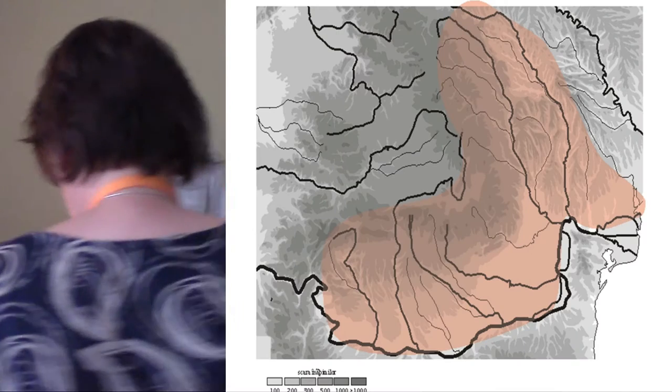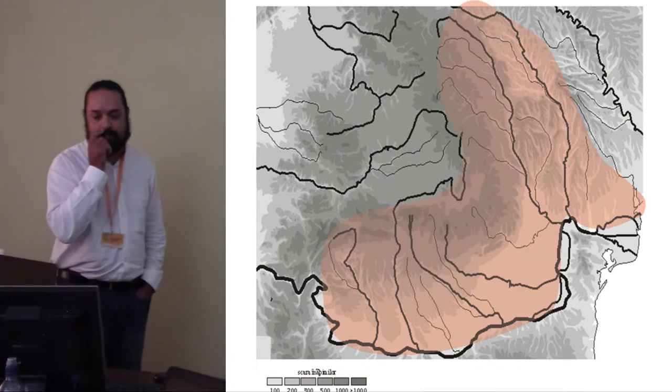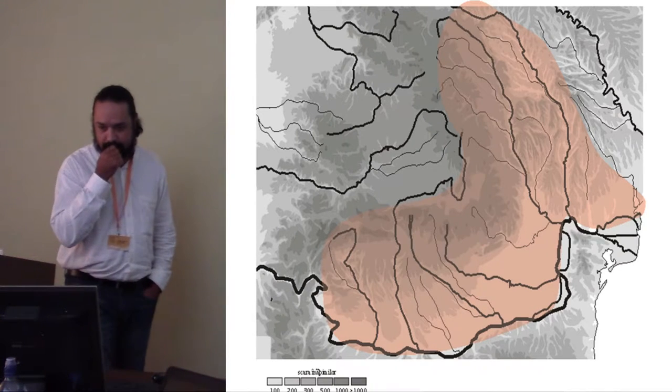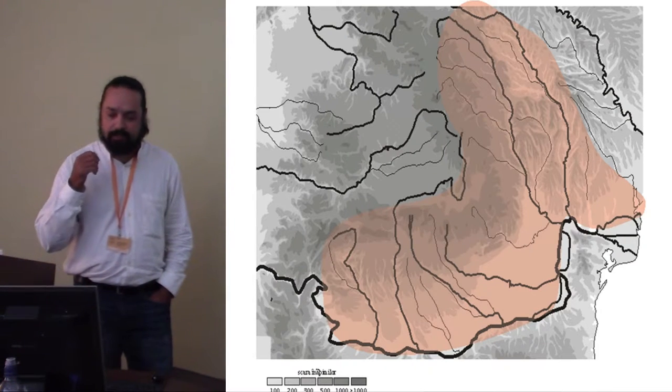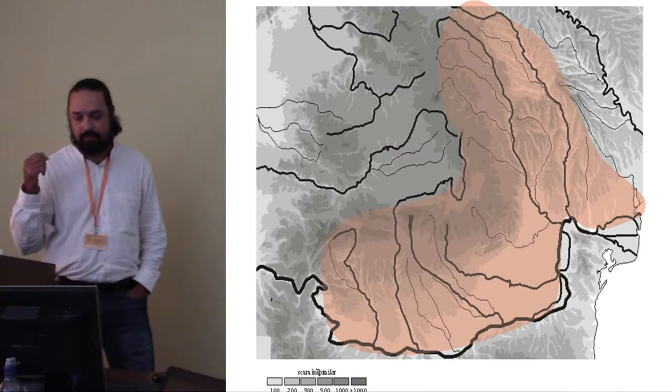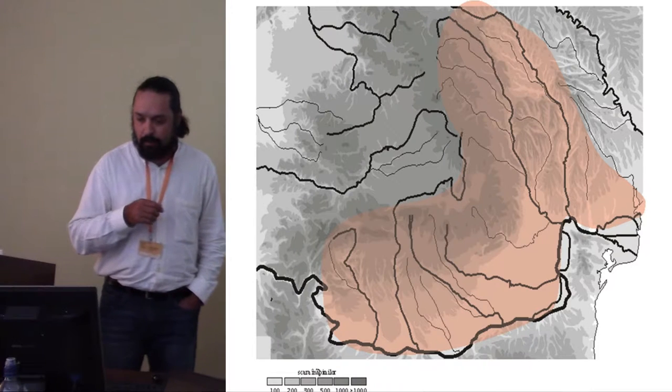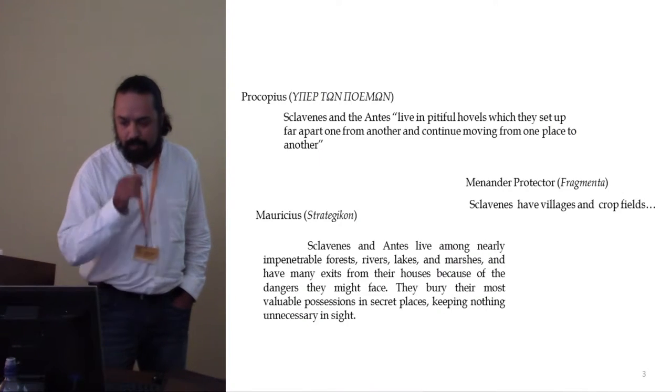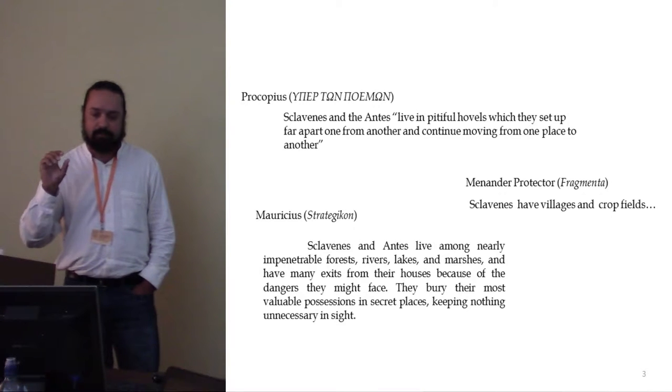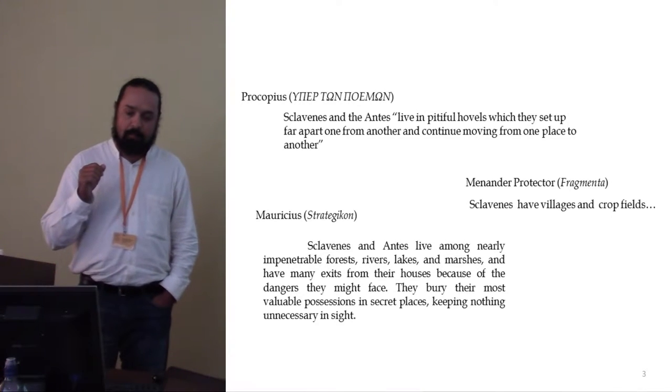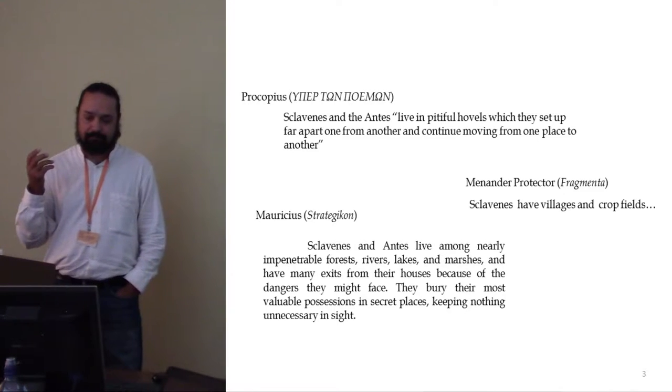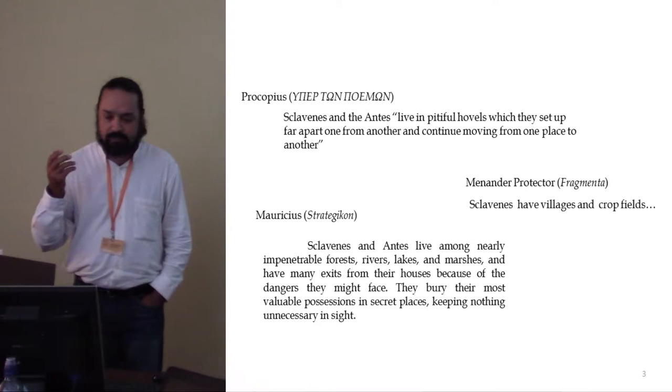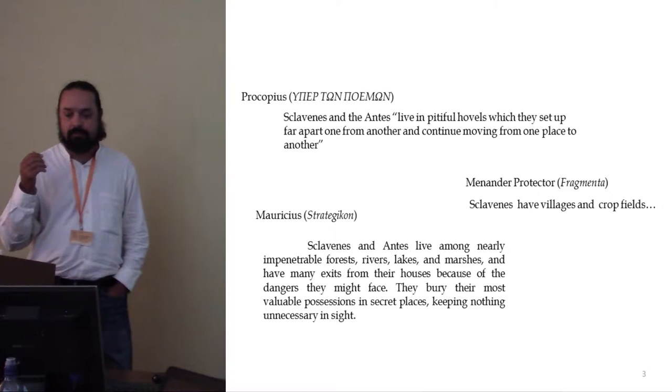Okay, so here is a space that I try to analyze and present today, the Laudanube area. From a historical point of view, it's the sixth-seventh century of the Sclavini and other nomad influences. We have some little short notices in the written sources about how the Sclavini ants from these piles live. So we have Procopius that says that they live in pitiful ovals which they set up far apart one from another and continue moving from one place to another.